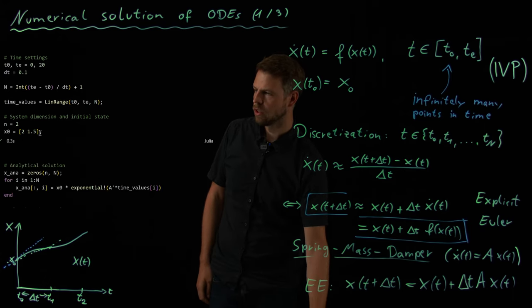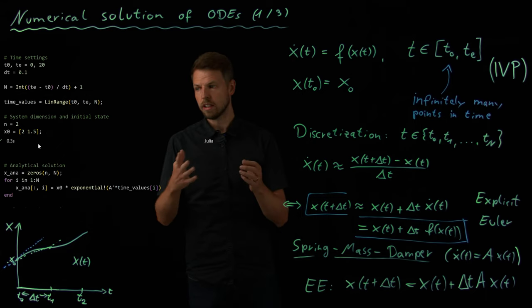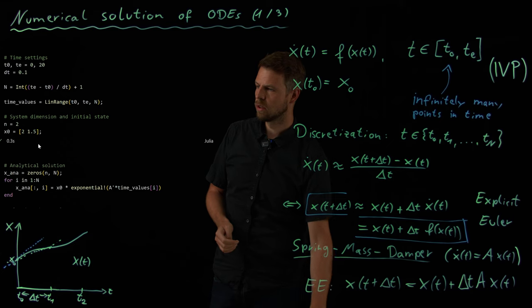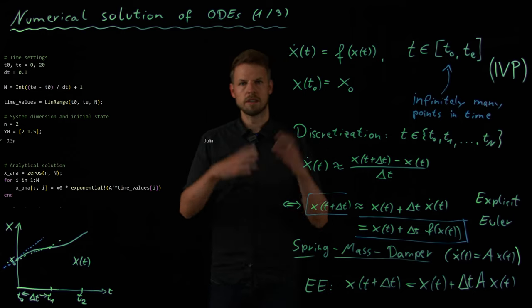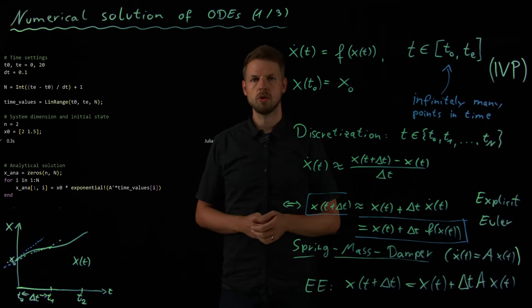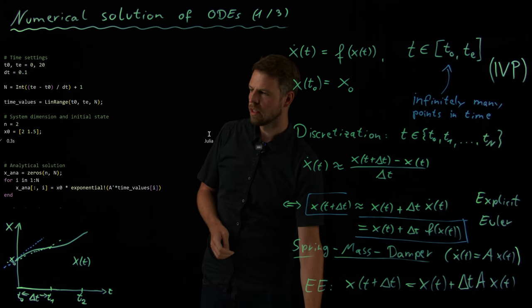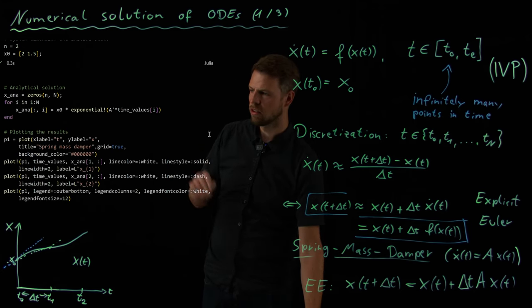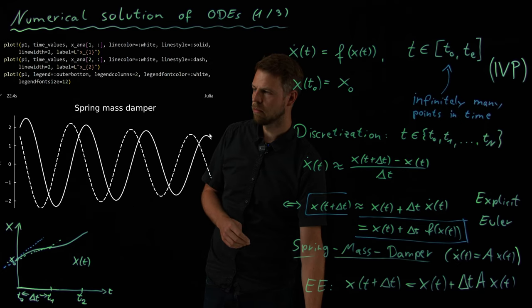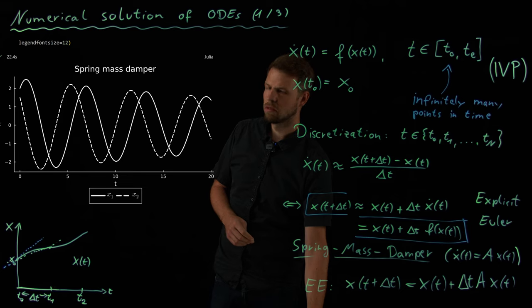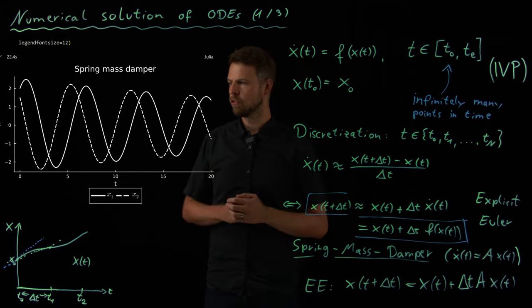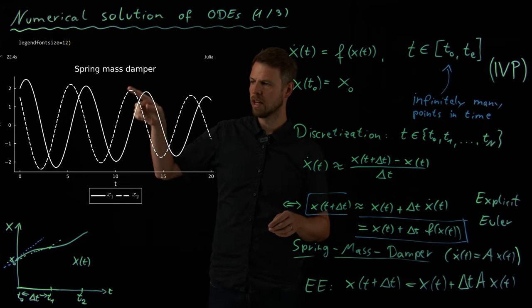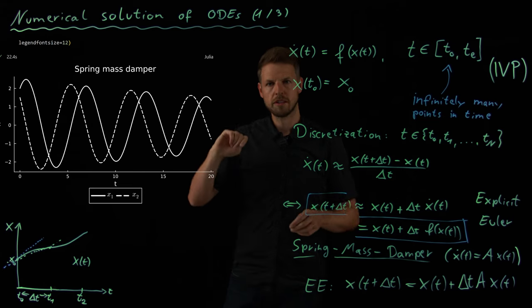And the solution is now actually very simple. We have also seen for linear systems, we do know the analytical solution. So this is what I have implemented here. So the analytical solution at every time instance is the initial condition times E to the A times T. Matrix exponential can be used to predict. And so if you look at this now, then this is just some plotting commands. This is the solution we get. So the spring mass damper system means we start at some initial condition I chose above, 2 for the position, 1.5 for the velocity, and we see that we have this oscillating behavior.